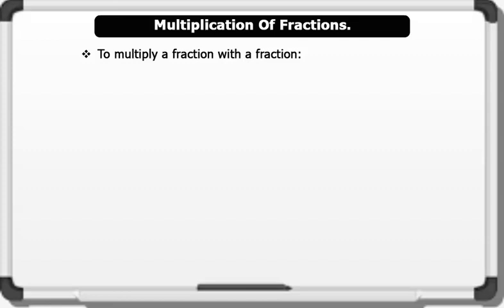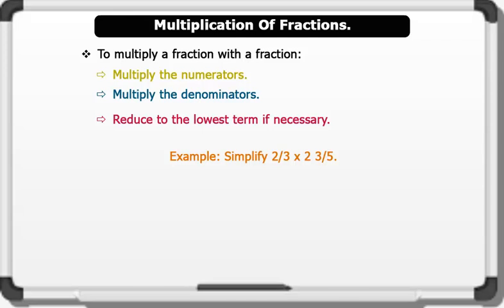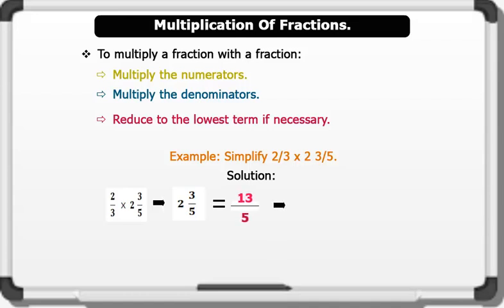Multiplication of fractions. To multiply a fraction by a fraction, we multiply the numerators and multiply the denominators, then reduce to the lowest term if necessary. Let's see an example: simplify 2 over 3 times 2 and 3 over 5. Solution: first we convert the mixed number 2 and 3 over 5 to an improper fraction, which is 13 over 5. Therefore we have 2 over 3 times 13 over 5.